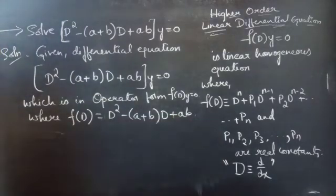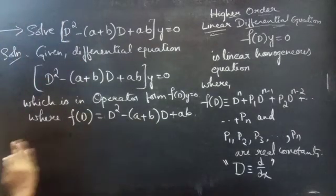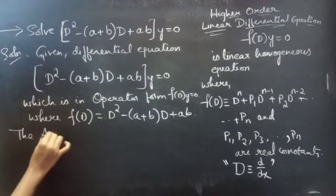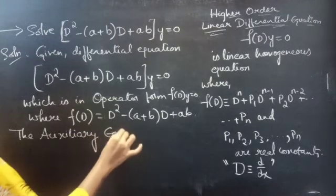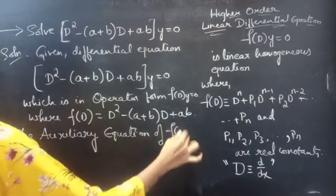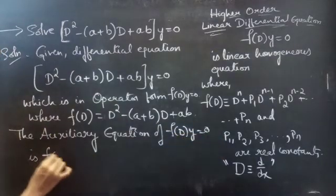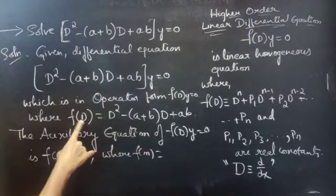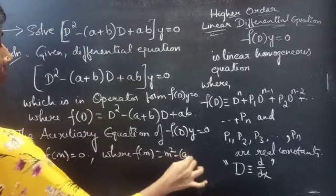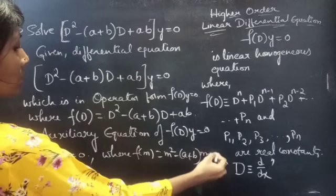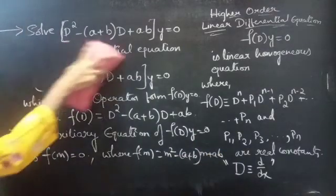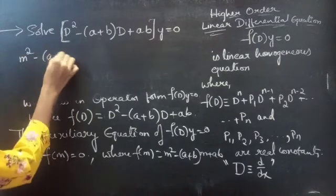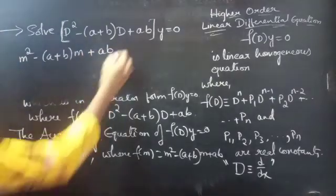Now we need to find the general solution to the given equation. Using the auxiliary equation, we will find the general solution to f of D into y equals to 0. We know that the auxiliary equation of f of D into y equals to 0 is f of m equals to 0, obtained simply by replacing D by m. So f of m equals to m squared minus (a plus b) into m plus ab. The auxiliary equation is m squared minus (a plus b) into m plus ab equals to 0.